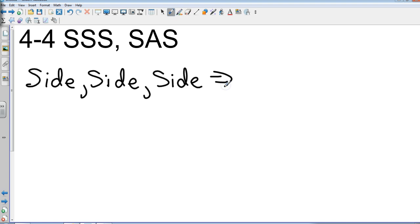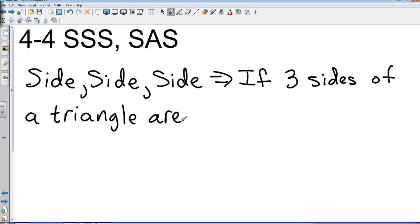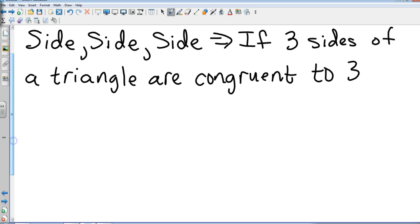If three sides of a triangle are congruent - lovely math word - to three what kind of sides? What's the magic math word that starts with a C? Not congruent, the other one. Corresponding. Are congruent to three corresponding sides of another triangle.